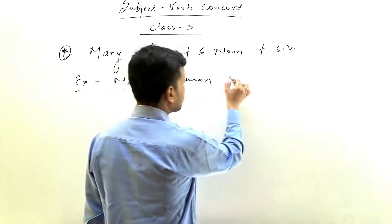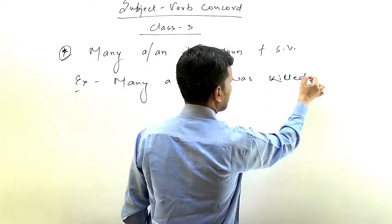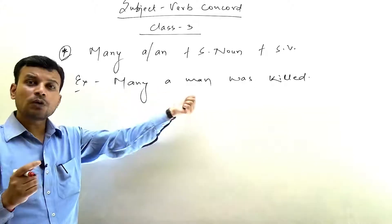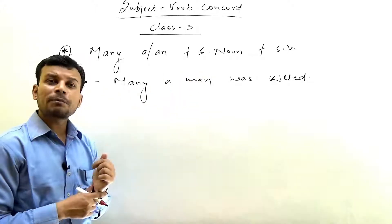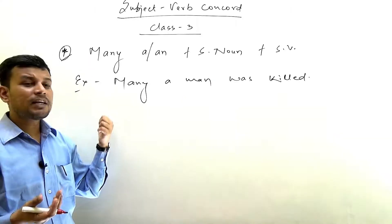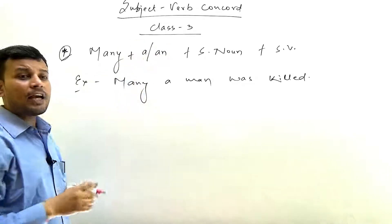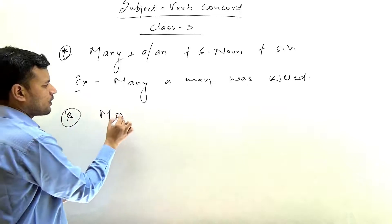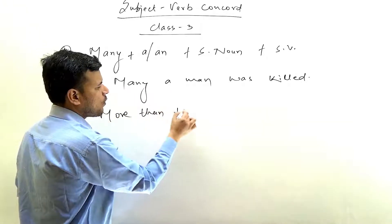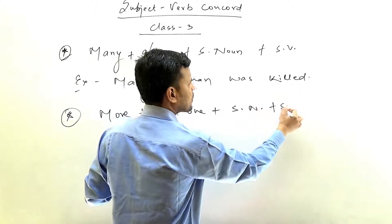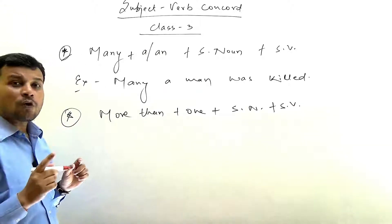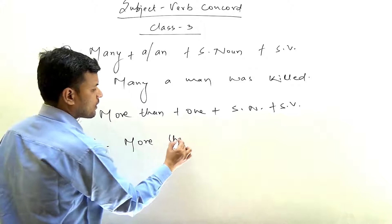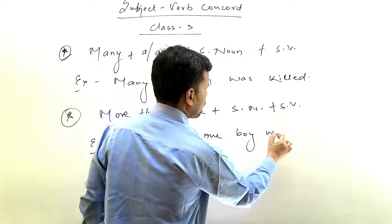With 'many a man,' should we use 'was' or 'were'? We take singular verb, so: 'many a man was killed,' meaning many people were killed. If we didn't have the article 'a,' we would write 'many men' with a plural verb. But since 'many a' is written, we always take singular noun and singular verb. The same structure applies to 'more than one' — 'more than one boy was absent,' not 'were absent.'